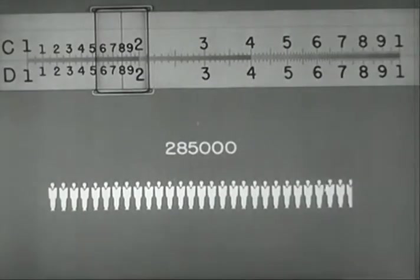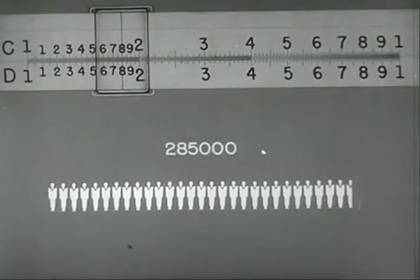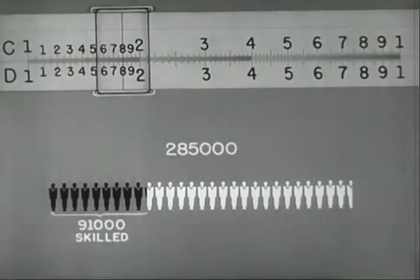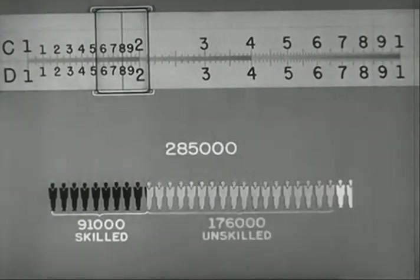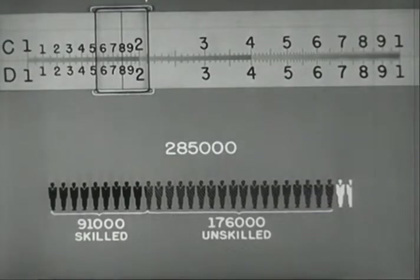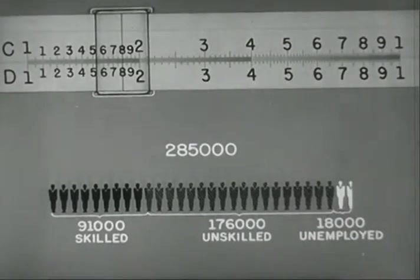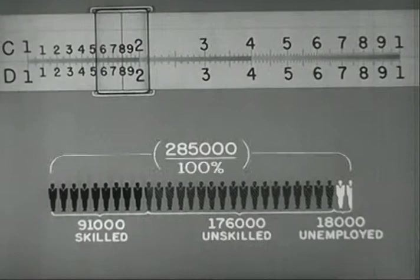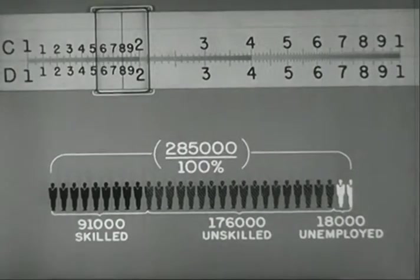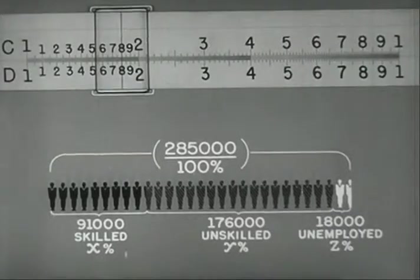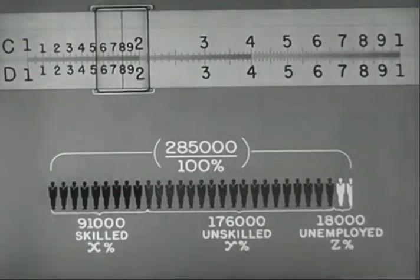Problems in percentage may also be worked by proportion. Of 285,000 men, 91,000 are skilled workmen, 176,000 unskilled, and 18,000 unemployed. What is the percentage in each group? 285,000 is 100%. Find the percentages of x, y, and z.